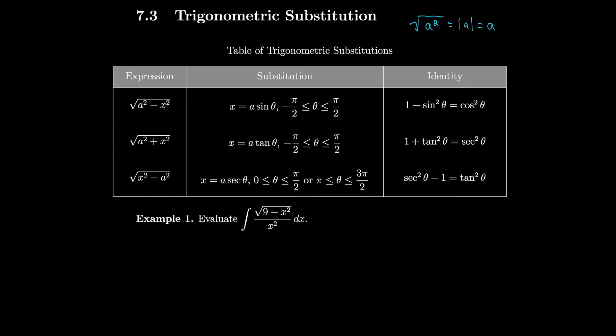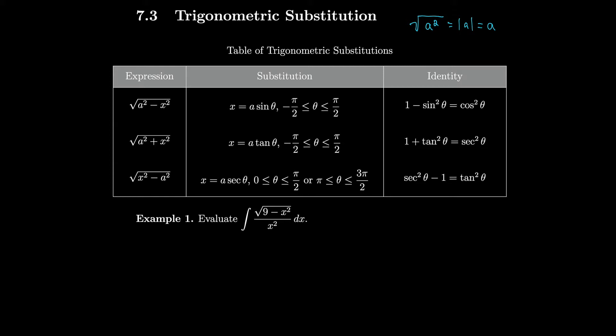When deciding which substitution to use, think about which identity you want to apply. If you have a squared minus x squared, think of it as 1 minus sine squared. If you have a squared plus x squared, think of it as 1 plus tangent squared. If you have x squared minus a squared, think of secant squared minus 1 equals tangent squared. Let's do an example.